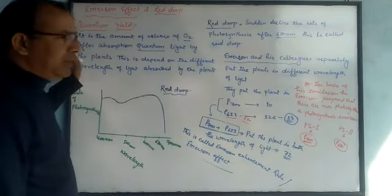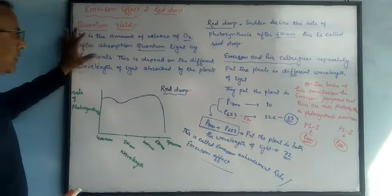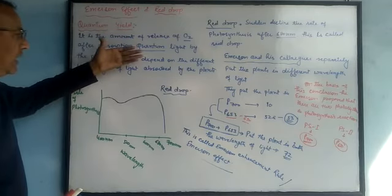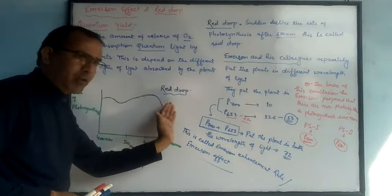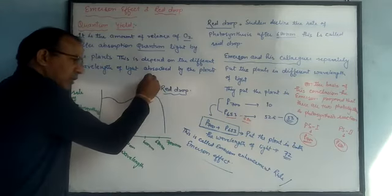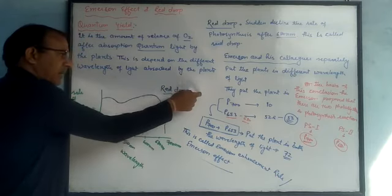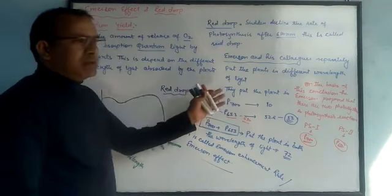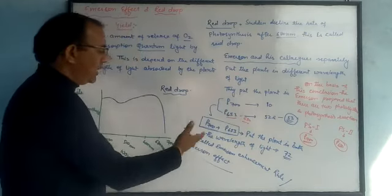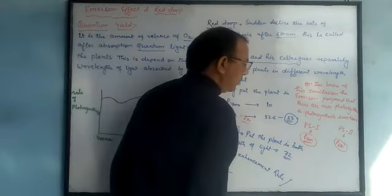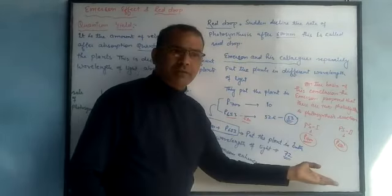To summarize: quantum yield is the amount of oxygen released by the plant during the absorption of quantum sunlight in the process of photosynthesis. Red drop refers to the sudden decline in photosynthesis after 680 nm wavelength. Emerson's experiment with separate and combined wavelengths showed two photosystems — photosystem one and photosystem two — which will be discussed further in the next part.